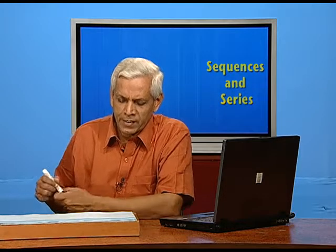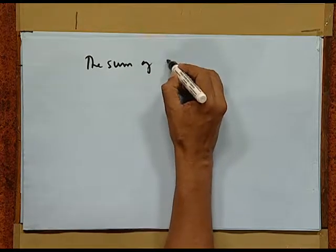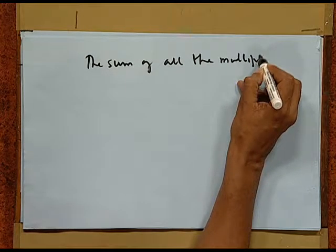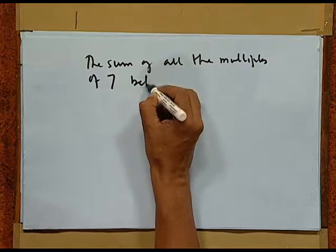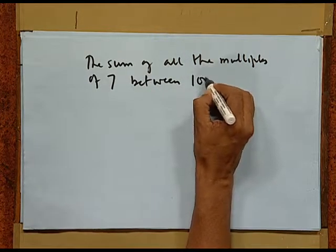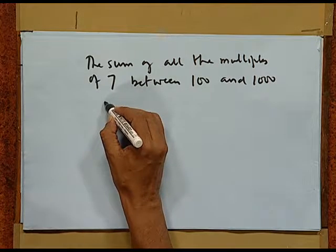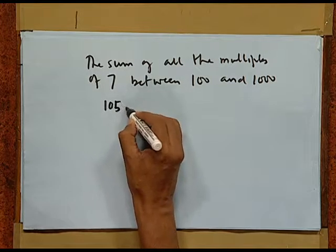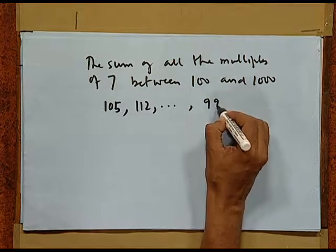Suppose we have to find the sum of all the multiples of seven between one hundred and one thousand. How should we proceed? The numbers are actually 105, 112, and so on up to 994.